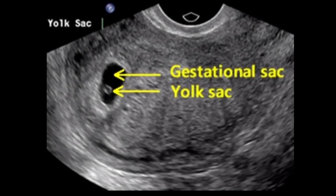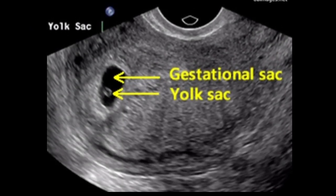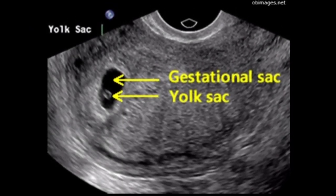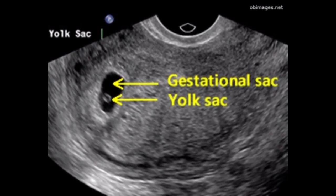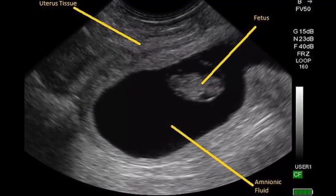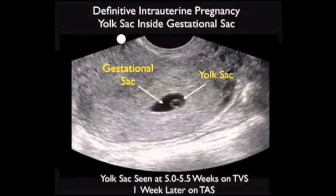There are three identifiable structures on ultrasound that appear sequentially during the first trimester: the gestational sac, the yolk sac, and the embryonic pole. The gestational sac appears approximately 30 days following the beginning of the last menstrual cycle. It appears as a small, hypoechoic structure near the fundus of the uterus. The gestational sac represents the chorionic sac and grows approximately 1 mm per day after it becomes visible.